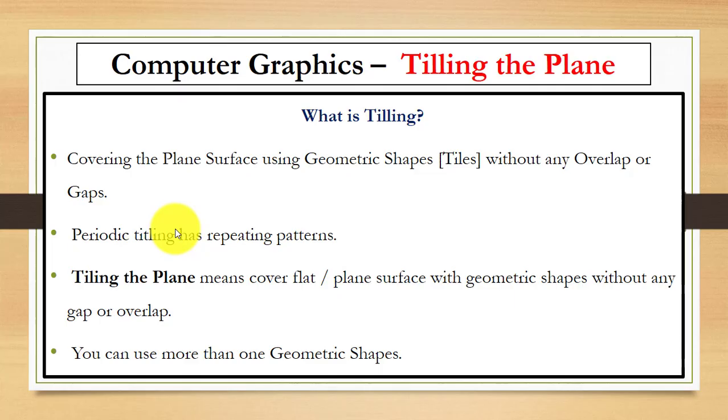Hello, in this video you will learn about what is tiling and different types of tiling. Tiling means we can cover the plane surface using different geometric figures or shapes, that is tiles, without any overlap or gap between them.